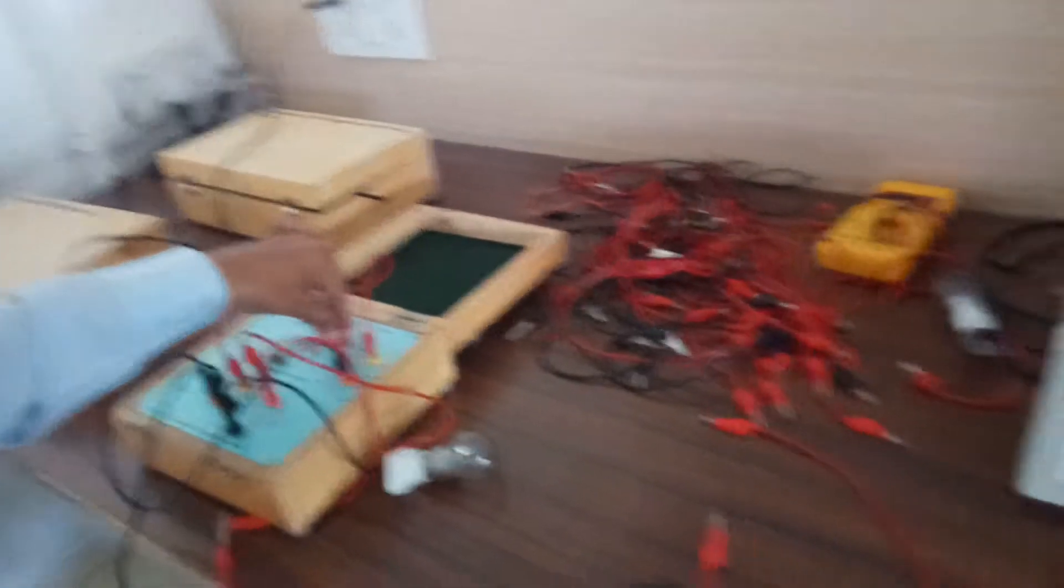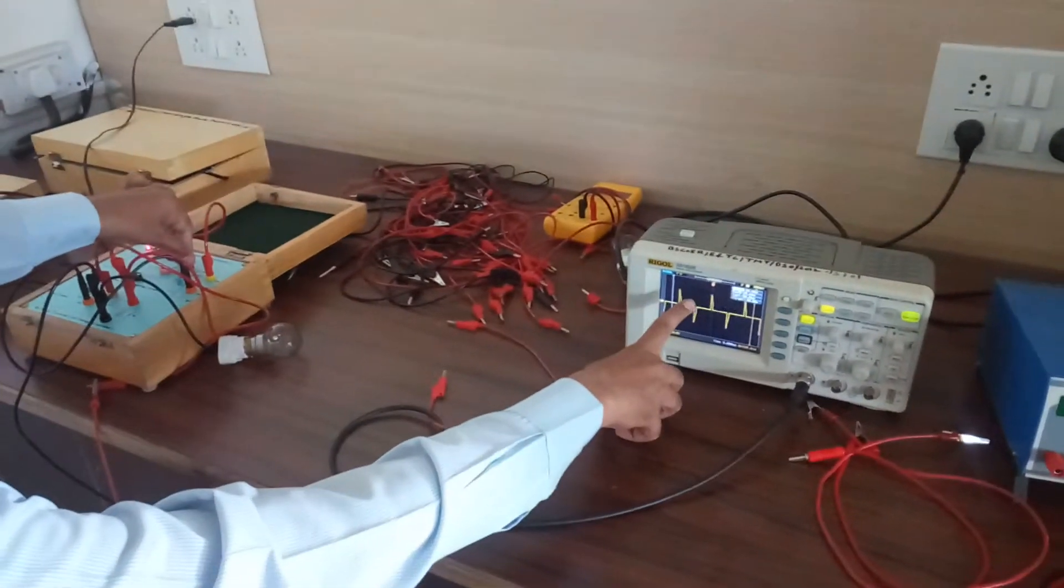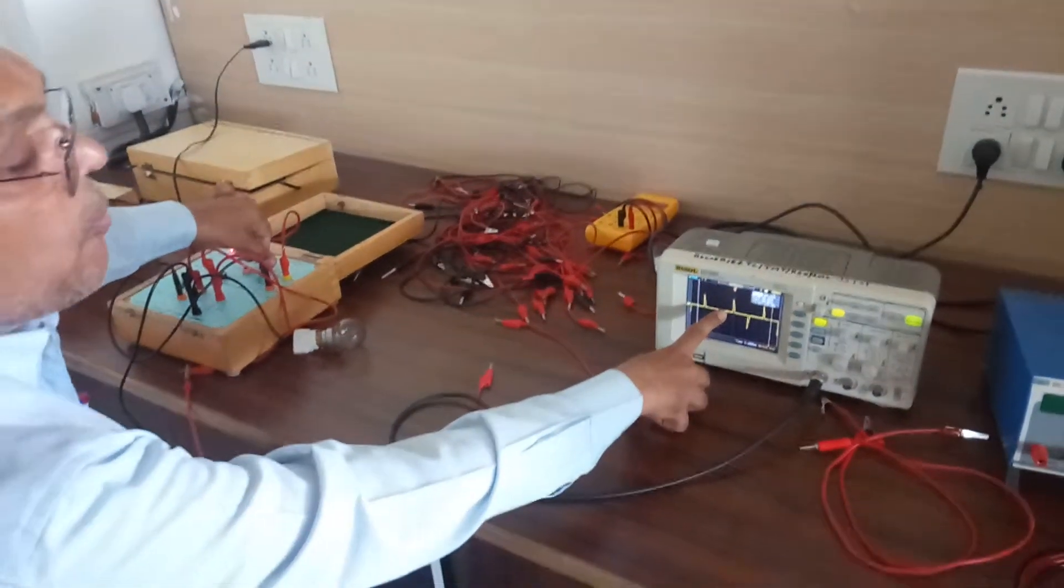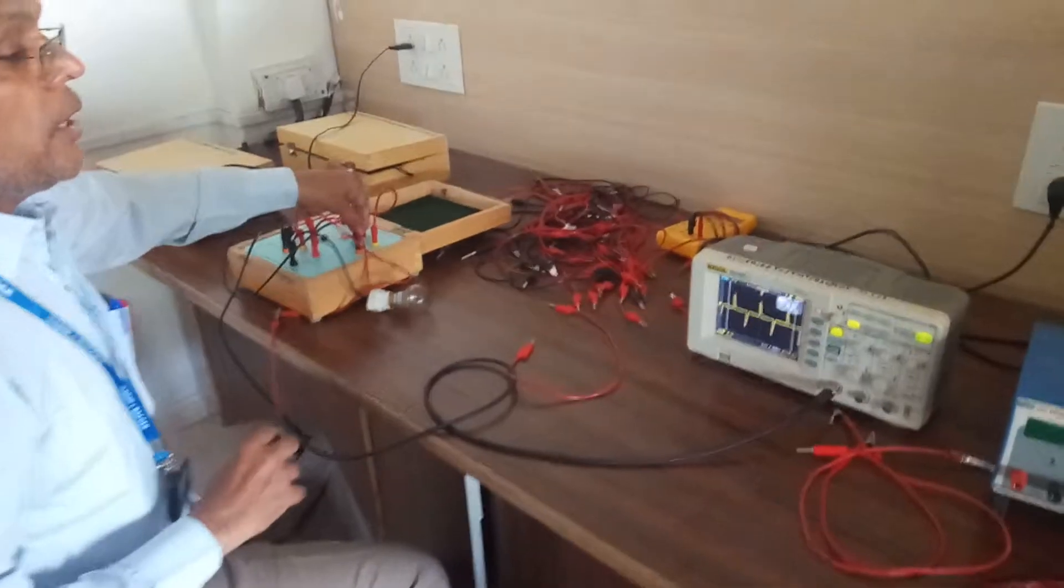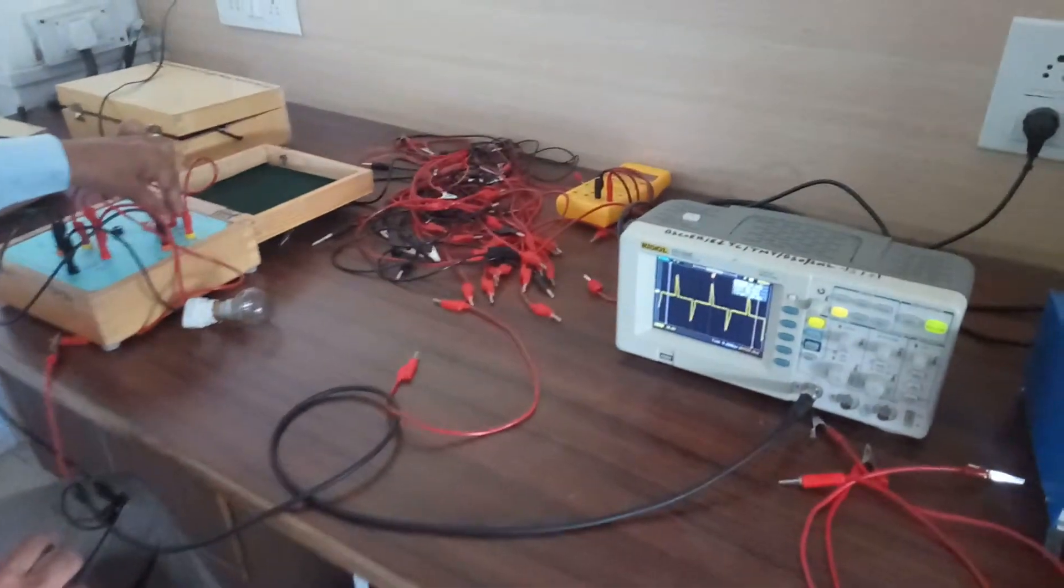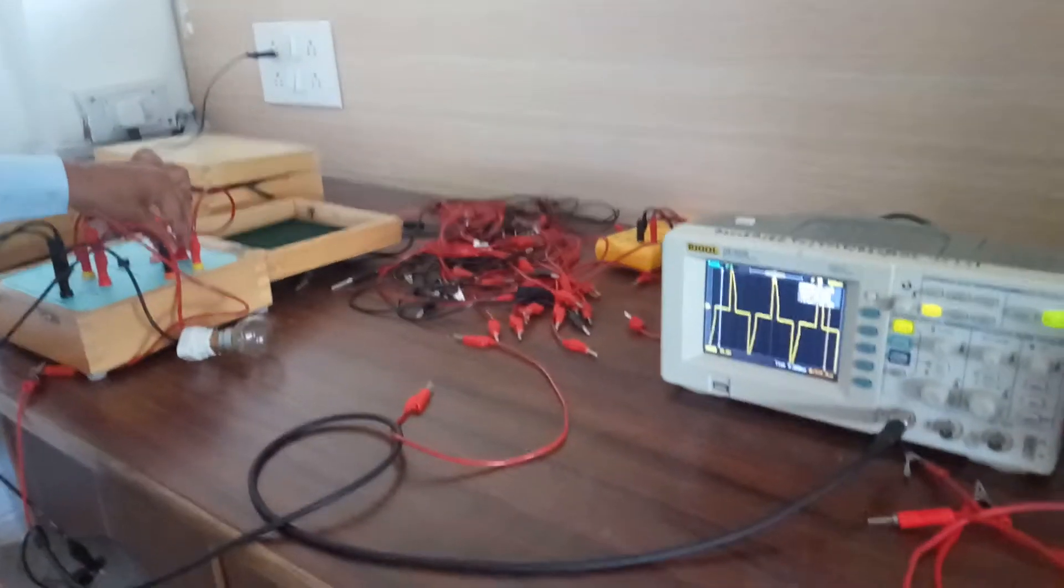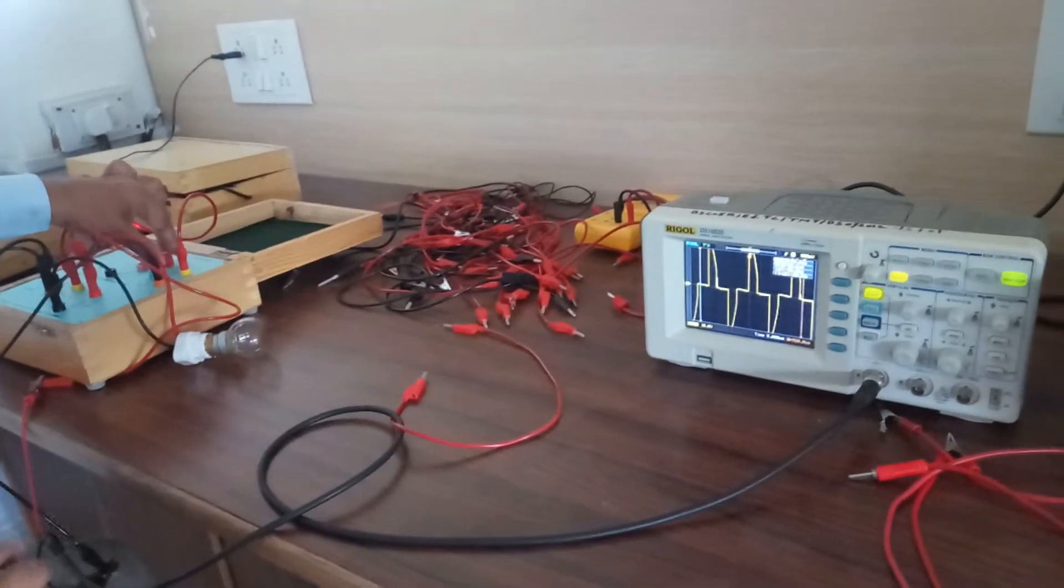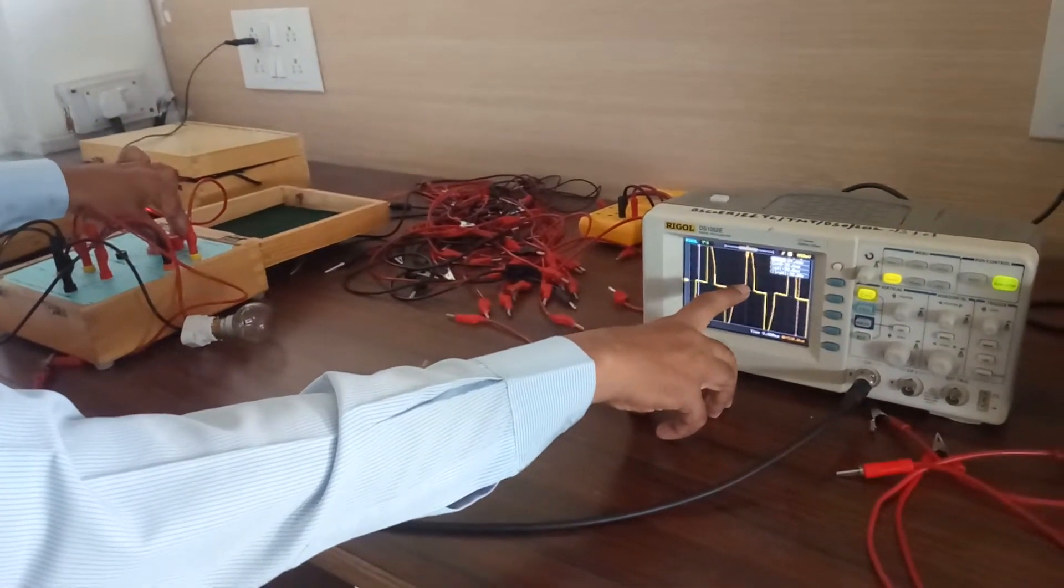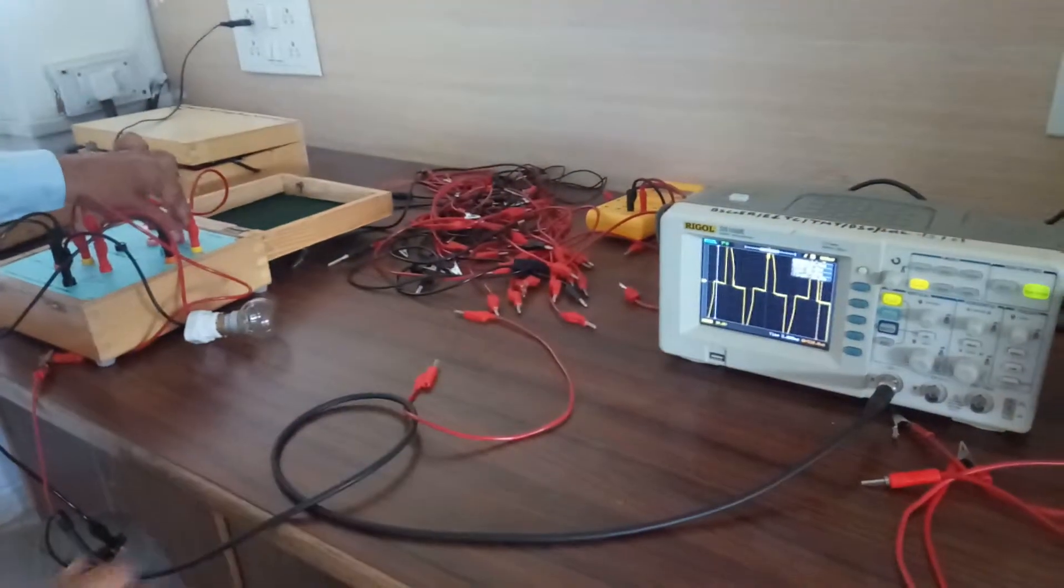By varying this potentiometer, I can change the firing angle. Now I am increasing the firing angle. So firing angle is increased. It will reach to its maximum value at which the output voltage will be minimum. Now I am reducing the value of alpha. So towards alpha minimum. So this is exactly at 90 degrees. You will be observing exact half cycle, quarter cycle during positive half cycle and quarter cycle during negative half cycle.